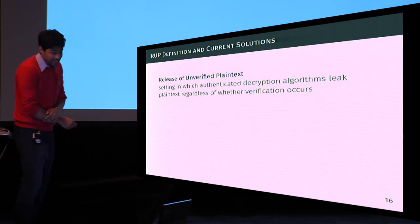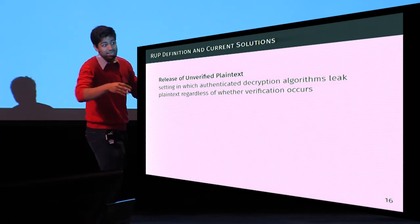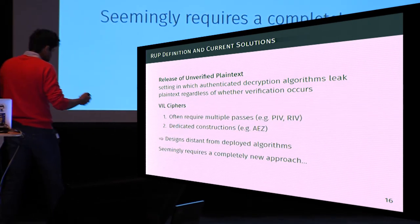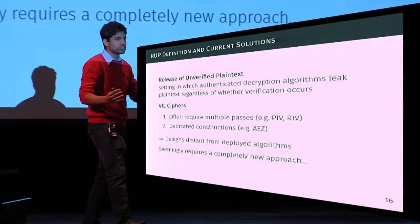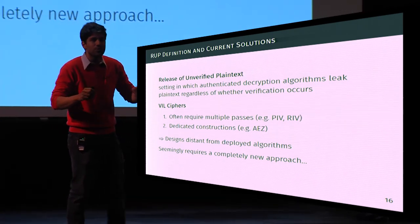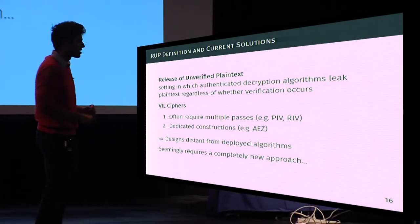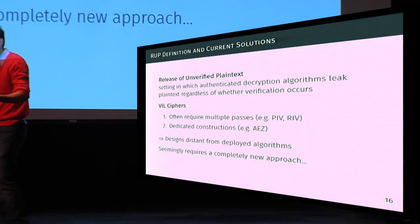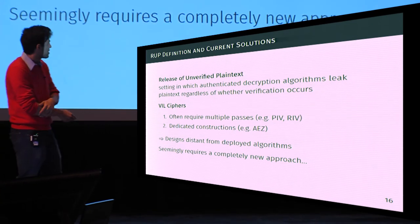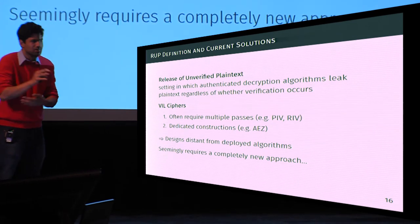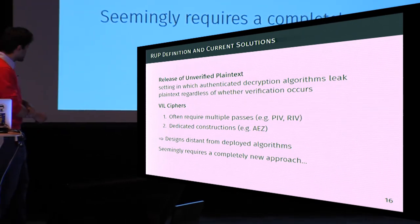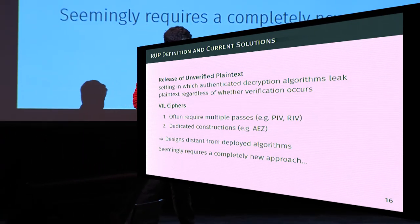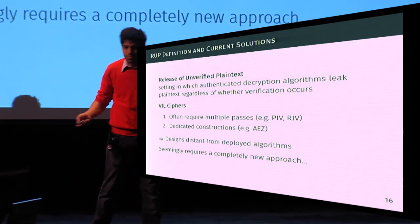Release of unverified plaintext describes a setting where authenticated decryption algorithms leak plaintext regardless of whether verification occurs. The current solutions that achieve good security in this RUP setting are variable-input-length ciphers or wide-block ciphers — heavy constructions requiring multiple passes, or very dedicated constructions like AEZ that are specialized and not easy to implement. All these designs are very distant from deployed algorithms, and achieving RUP security has seemingly required a completely new approach.